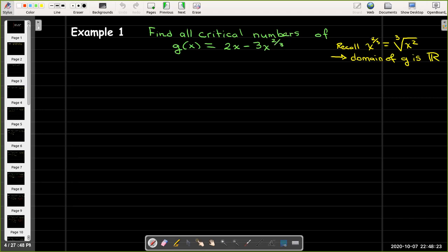Well, x to the 2 thirds is the same as the cube root of x squared. And so again, we can put any real number in the place of x in that expression, and it will be defined. So the domain of this function g is all real numbers.